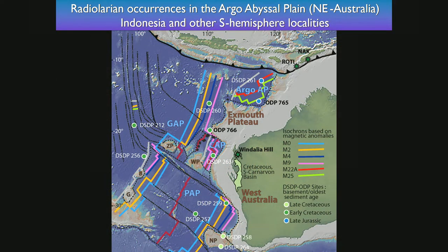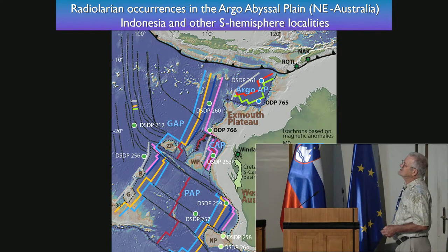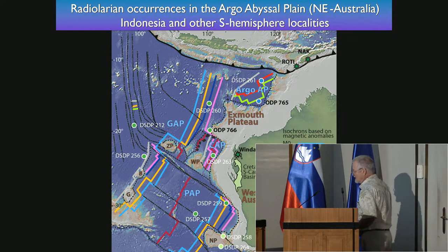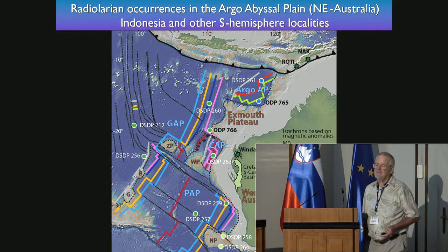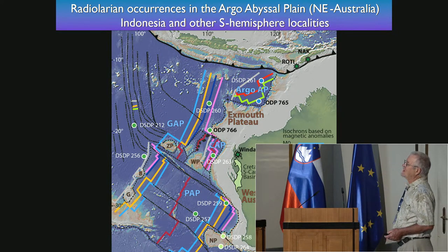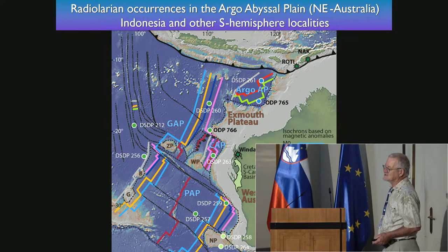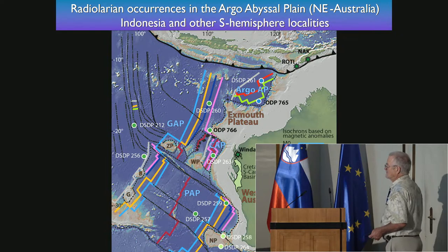We are here in the Argo Basin with special magnetic anomalies that do not correspond to the opening of the Indian Ocean. Most people thought that there was a landmass here originally which has moved away, and there were two openings: an opening in the Argo Basin and then the opening of the true Indian Ocean. This piece that is lacking is supposed to be in the Himalayas, but it could also be much farther east in Southeast Asia, according to Stampfli.